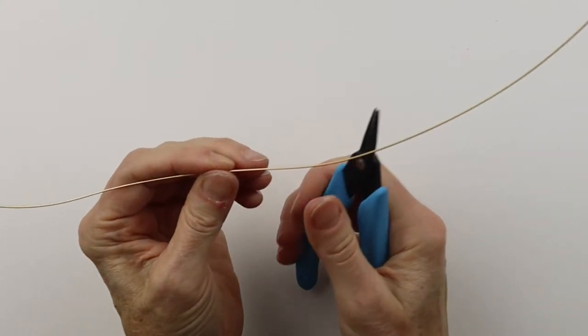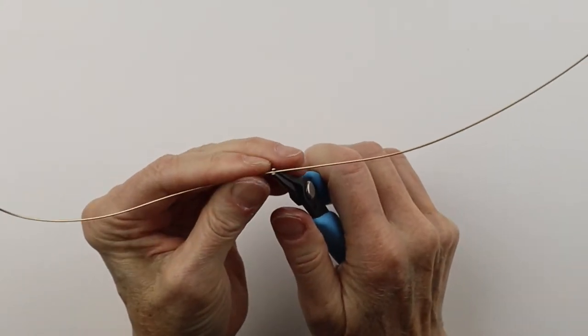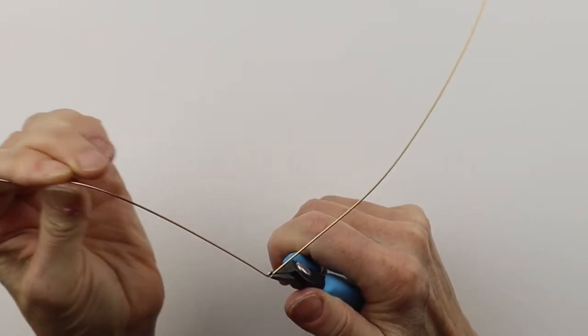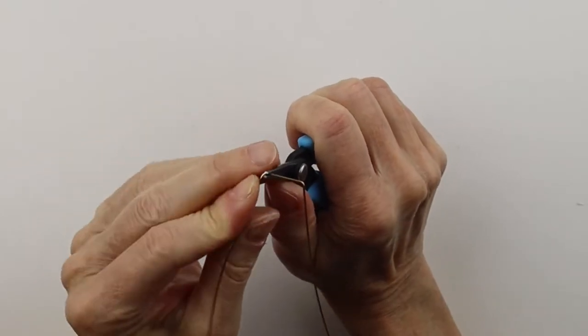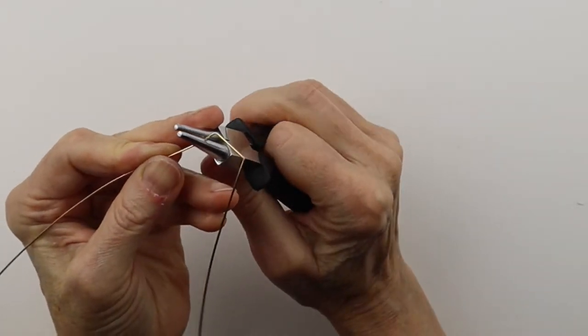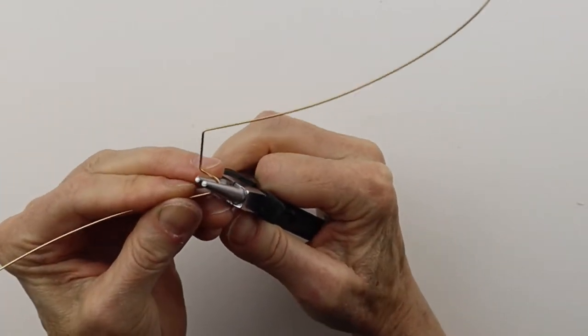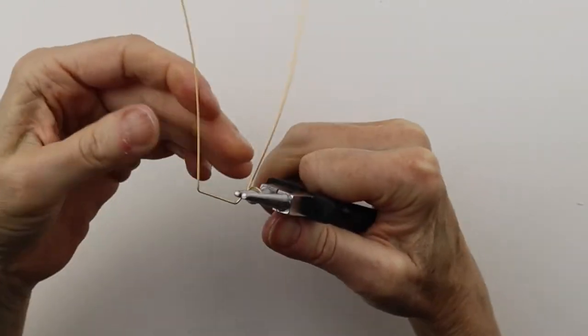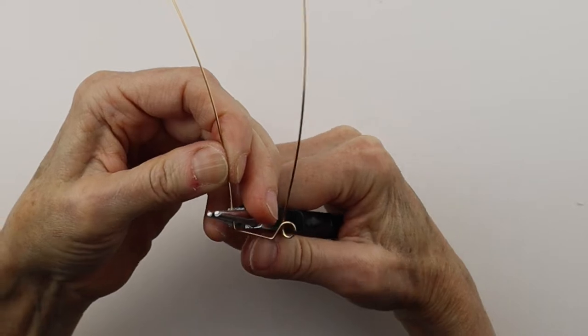I'll start by bending the wire for the feet. So we're going to start about in the middle and bend that one down and then bend that one down. I'm going to just make the feet fancy, so we're going to get our round pliers, bring that one around and this one too.